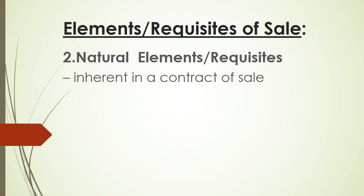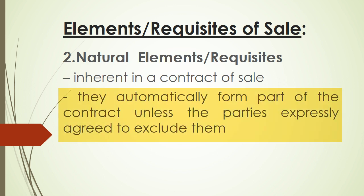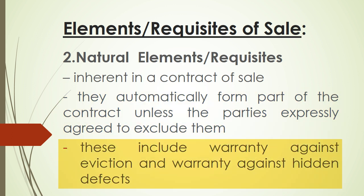On the other hand, when you talk about natural elements or requisites, these are already inherent in a contract of sale. They automatically form part of the contract unless, of course, the parties expressly agreed to exclude these elements. Examples of natural elements or requisites are warranty against eviction and warranty against hidden defects.